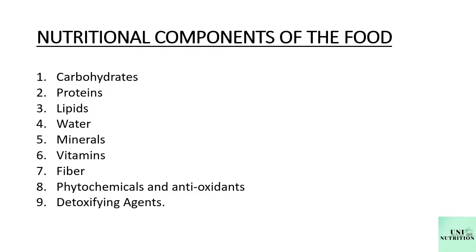What are all the nutritional components of food? These are carbohydrates, proteins, lipids, water, minerals and vitamins, fibers, phytochemicals, antioxidants and detoxifying agents. Phytochemicals are anti-carcinogenic substances that are present in plants. Antioxidants, as the name signifies, prevent oxidation inside the body. Detoxifying agents help to detox the body.